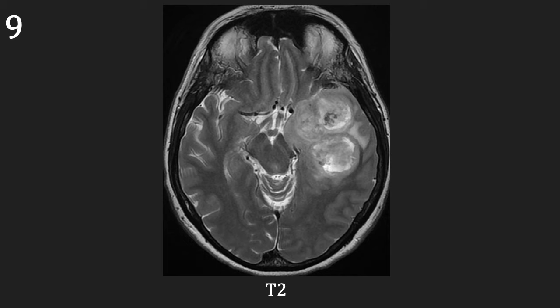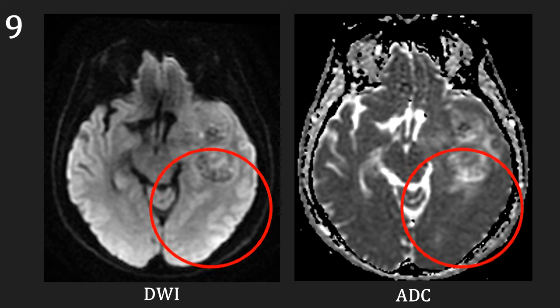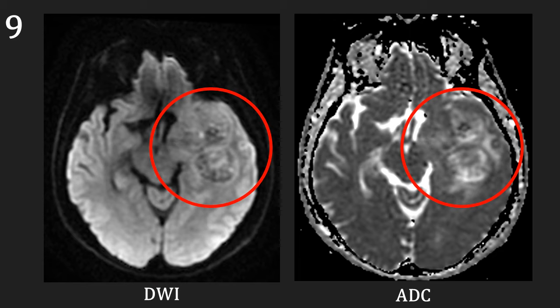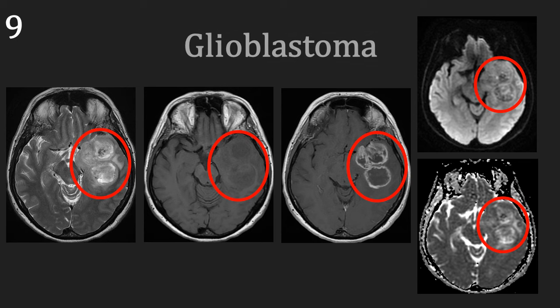Our next case is a 56-year-old female who presented with a headache, a 6-week history of intermittent confusion, memory loss, and visual disturbance. Her family had also noticed a change in her behaviour. There was an abnormality on the CT and this MRI was performed to further assess it. There is a large irregular mass in the left temporal lobe, with no further masses demonstrated. On the pre- and post-contrast images, the single lesion is highlighted with peripheral irregular enhancement. On the DWI and ADC, there is some faint signal abnormality. This is a 56-year-old female with a single irregular mass lesion in the left temporal lobe with peripheral contrast enhancement and mild areas of signal abnormality on the DWI and ADC sequences. On histology, this turned out to be a glioblastoma.